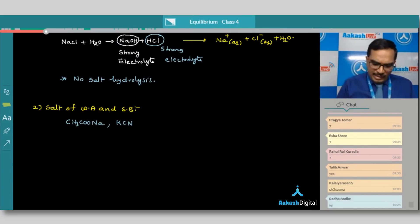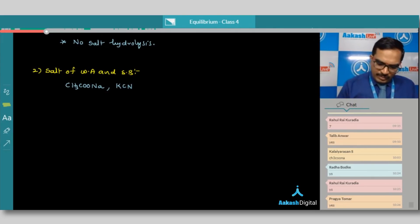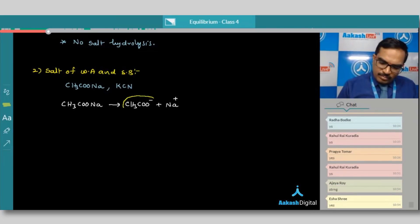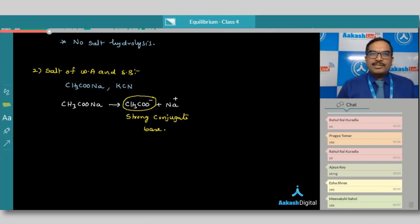Now if you place this salt in water, so first of all this is salt. This will undergo complete ionization to give acetate ion and sodium ion. But we know acetate ion is conjugate base of acetic acid. Conjugate base of acetic acid, which is strong. Strong conjugate base. That means if you place this in water, definitely what we feel, acetate ion should react with water. And also Na+ should react with water. But ultimately we will get acetic acid and sodium hydroxide.